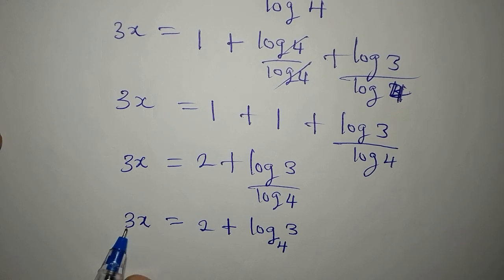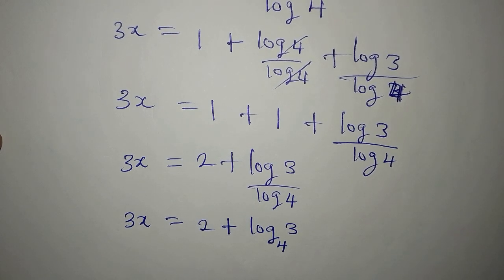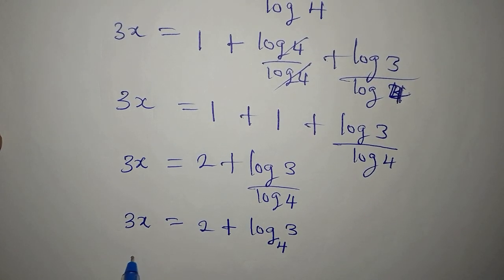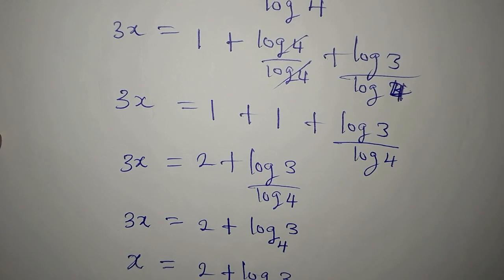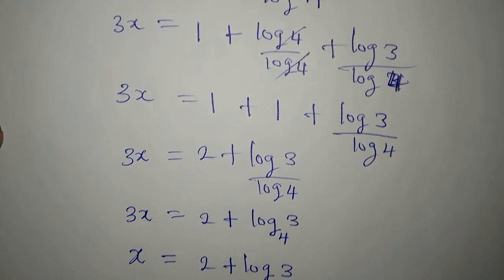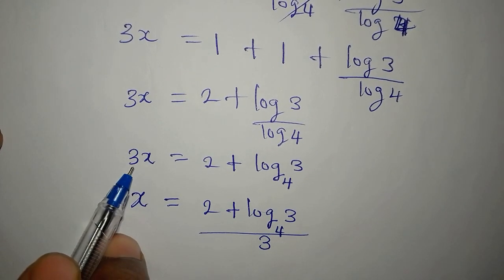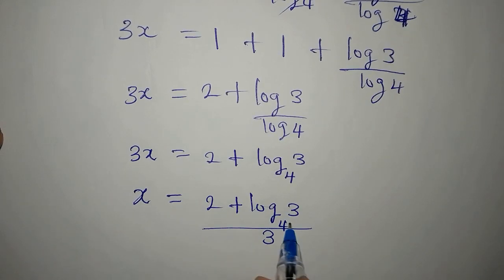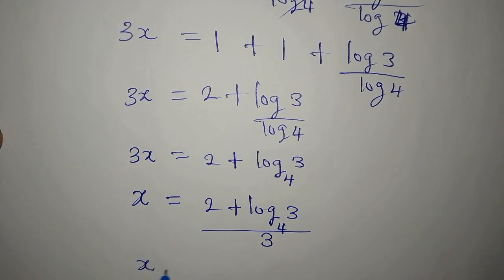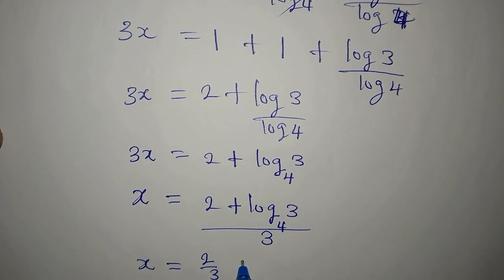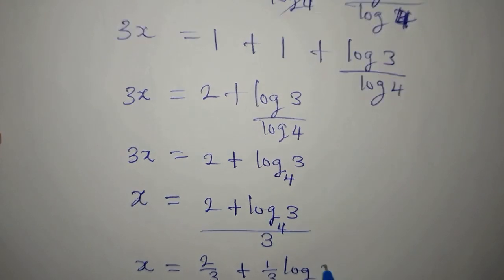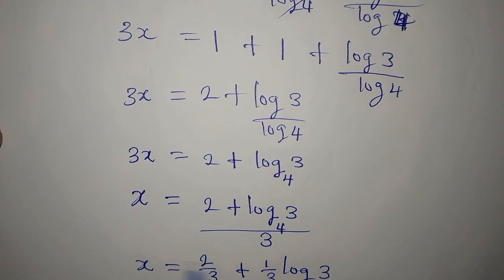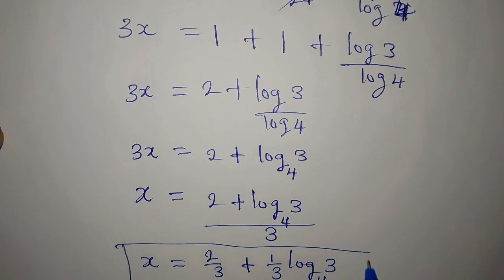We still have 3 on the left, so we divide both sides by 3. We get x equal to 2 plus log₄3, all divided by 3. We can rewrite this as x equals two-thirds plus one-third times log₄3. So that is the value of x.